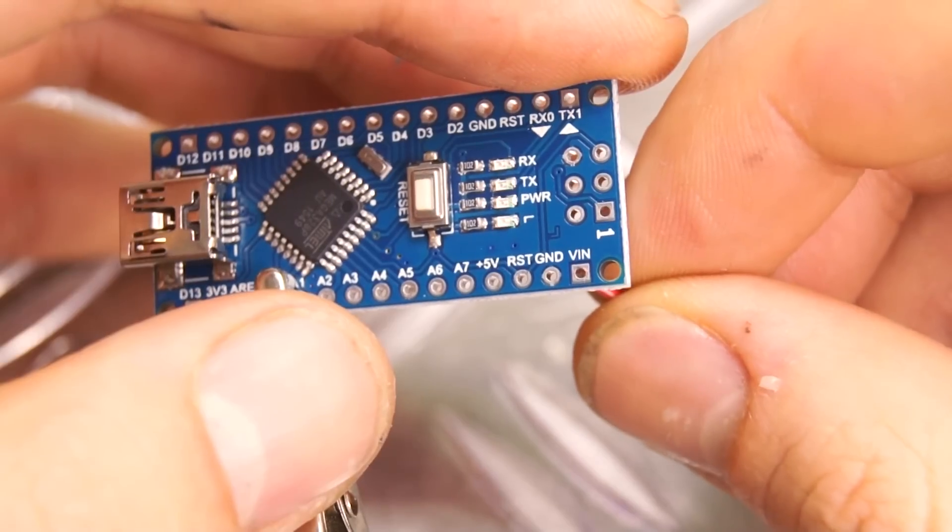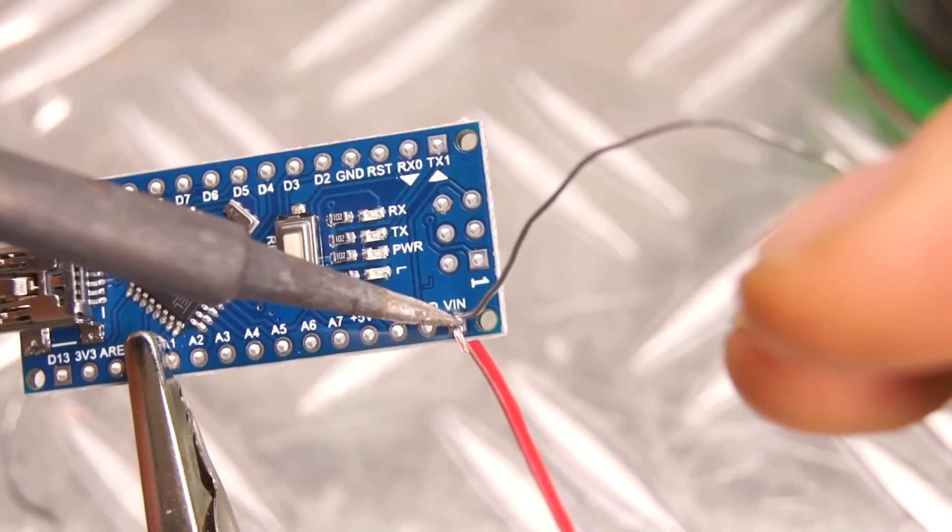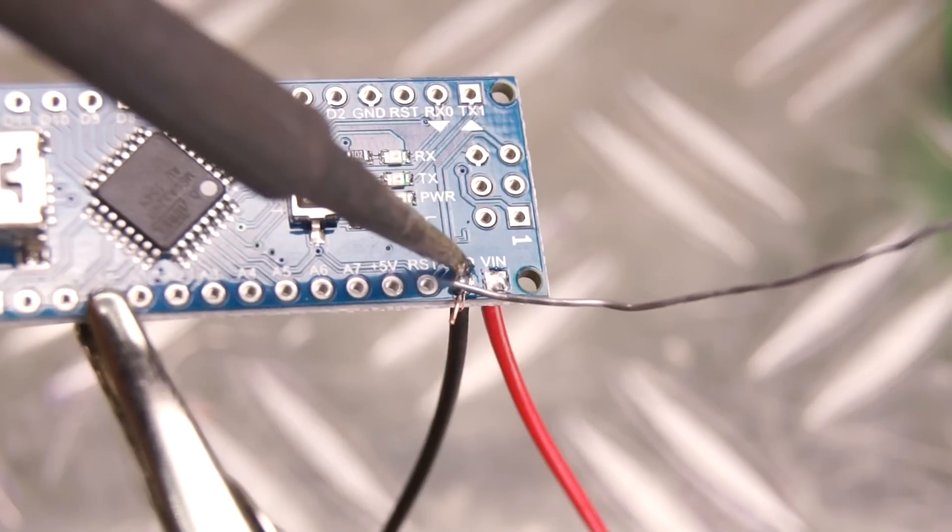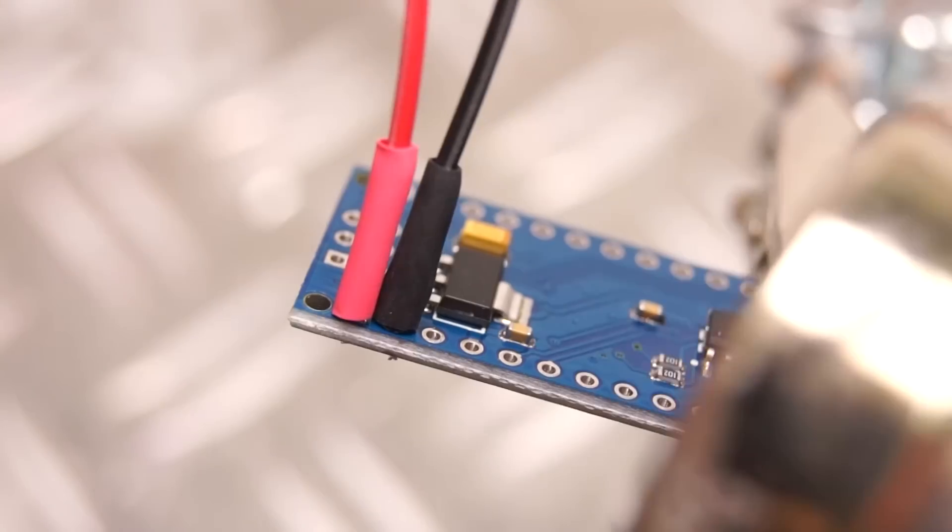Now we're gonna solder a wire to the voltage in and ground pin on the Arduino. If you've been working with Arduinos before, you've probably seen this a thousand times already, but if you haven't, this is how we can power it with an external power source.